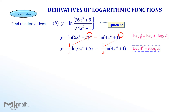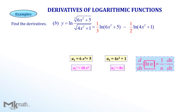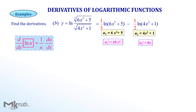Now we can apply the derivative of natural log formula. Let's identify u and find u'. For the first term, u equals 6x cubed plus 5 and u' equals 18x squared. For the second term, u equals 4x squared plus 1 with u' equals 8x. Now we have u and the derivative of u values, so let's apply the right side of the formula for each one. Make sure that there is no natural log in the derivative.